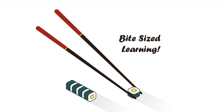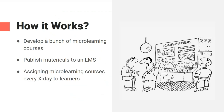What is a microlearning course, and how does it work? It's easy: first of all, we develop a bunch of microlearning courses — 10, 20, 30, 50, and so on. Then we publish the courses to a learning management system. And the last step is assigning microlearning courses — one, two, or maximum three courses every third, fifth, or seventh day to learn.